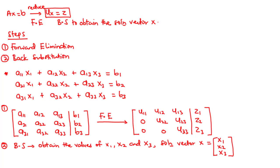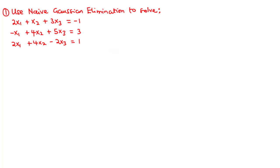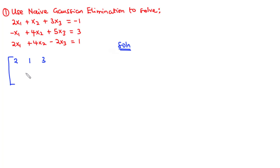In this example we are going to use naive Gaussian elimination to solve the given system of equations. As we learned, the first thing is to represent the system in augmented form, writing the coefficients of x1, x2, and x3 in order. We get: row 1: 2, 1, 3 | –1; row 2: 4, 5, 2 | 3; row 3: 2, 4, –2 | 1. After representing the system in augmented form, we perform forward elimination followed by back substitution.